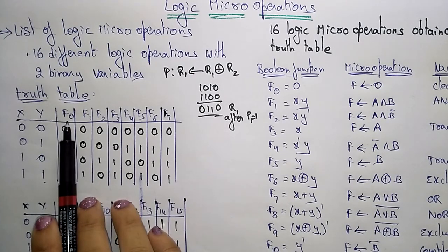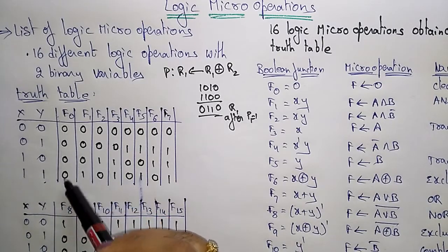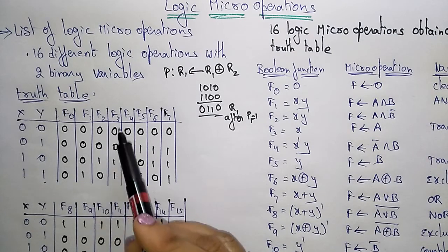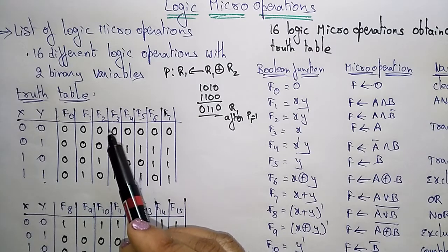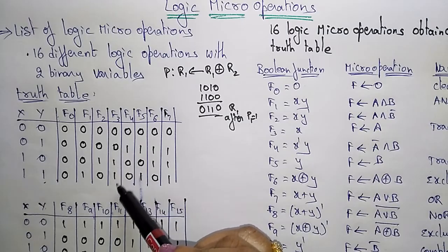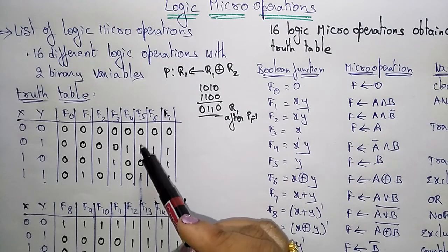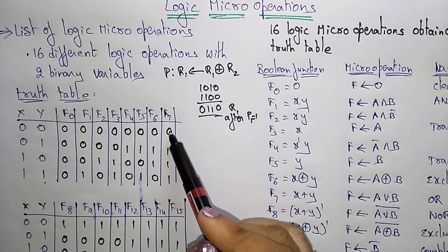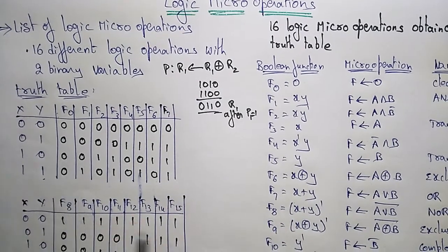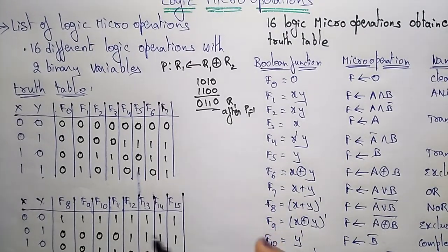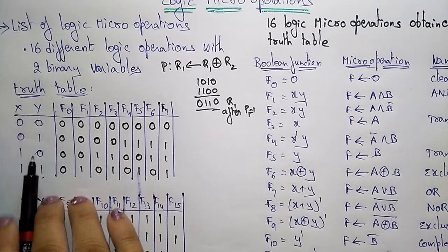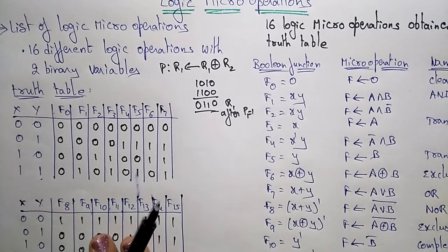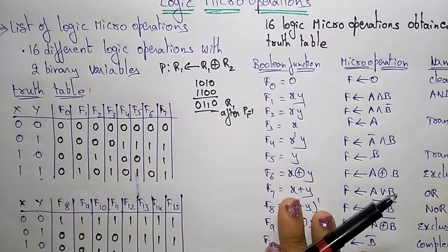The 16 operations are labeled F0 through F15. F0 is all zeros: 0000. F1 is 0001, F2 is 0010, and so on. These 16 bit patterns correspond to the 16 possible logic micro operations for two binary variables.